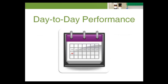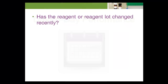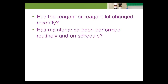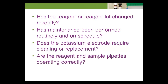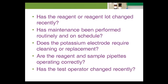Standard deviation may also be used to monitor ongoing day-to-day performance. For instance, if during the next week of testing the standard deviation calculated in the example for the normal potassium control increases from 0.08 to 0.16 millimole per liter, this indicates a serious loss of precision. This instability may be due to a malfunction of the analytical process. Investigation of the test system is necessary, and the following questions should be asked: Has the reagent or reagent lot changed recently? Has maintenance been performed routinely and on schedule? Does the potassium electrode require cleaning or replacement? Are the reagent and sample pipettes operating correctly? Has the test operator changed recently?